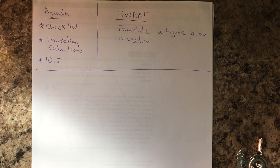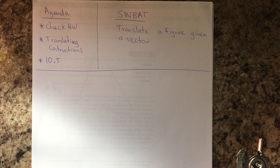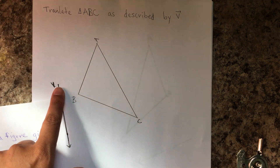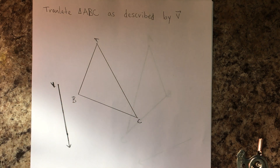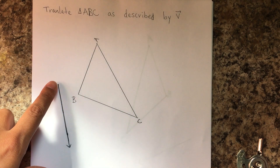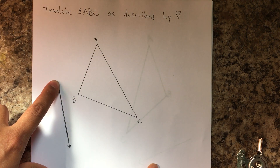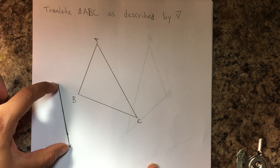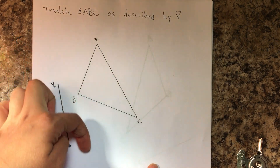Hello students. Today's agenda is to check homework and learn about translation — translating constructions. Students will be able to translate a figure given a vector. A vector is a ray that tells you how much you're going to move a figure and in what direction. Here it tells me I'm going to move my triangle this much and in this direction, so basically every vertex is going to be moved that much and in that direction.